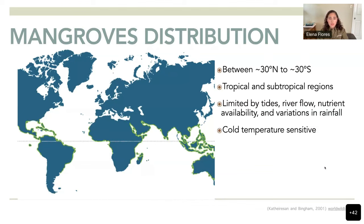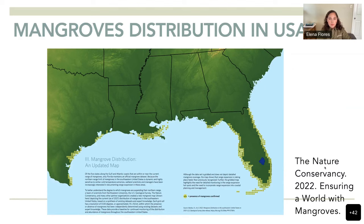Pretty much cold temperature is what delimits the mangrove forest. In the U.S., we have black mangrove, red mangrove, and white mangrove distributed along the Gulf Coast.